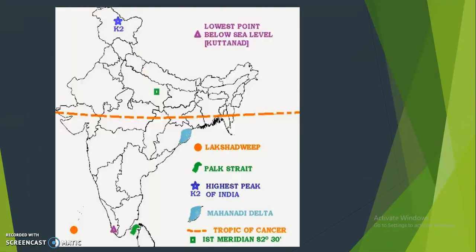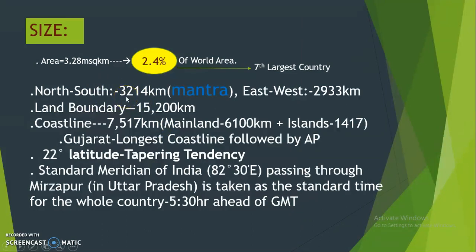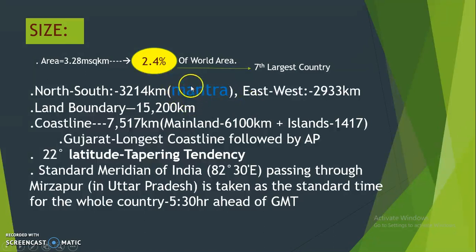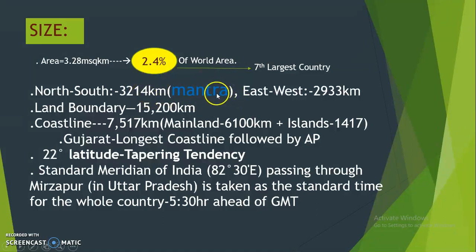The north to south distance of India is 3,214 kilometers, and the east to west distance is 2,933 kilometers. To remember: north-south is approximately 3,214 km and east-west is approximately 2,933 km — both roughly around 3,000 km.